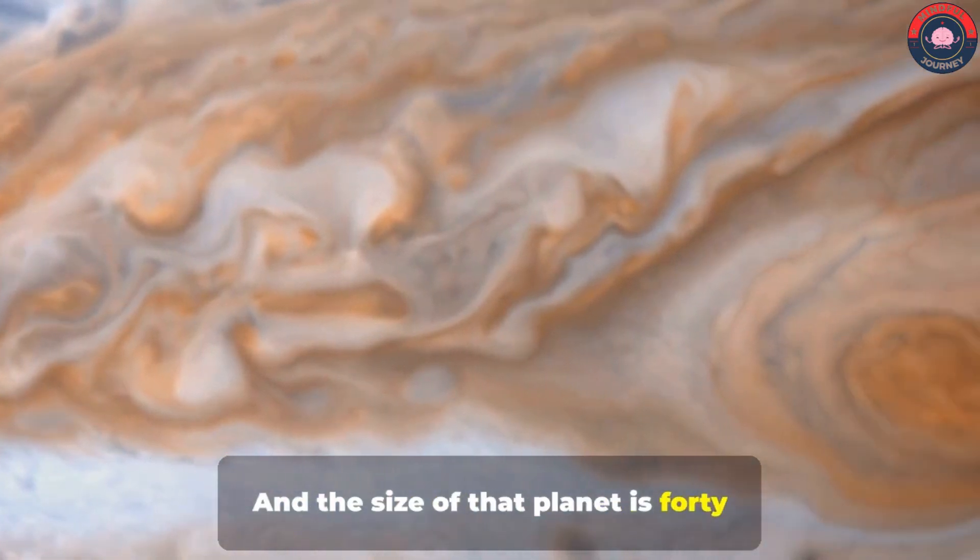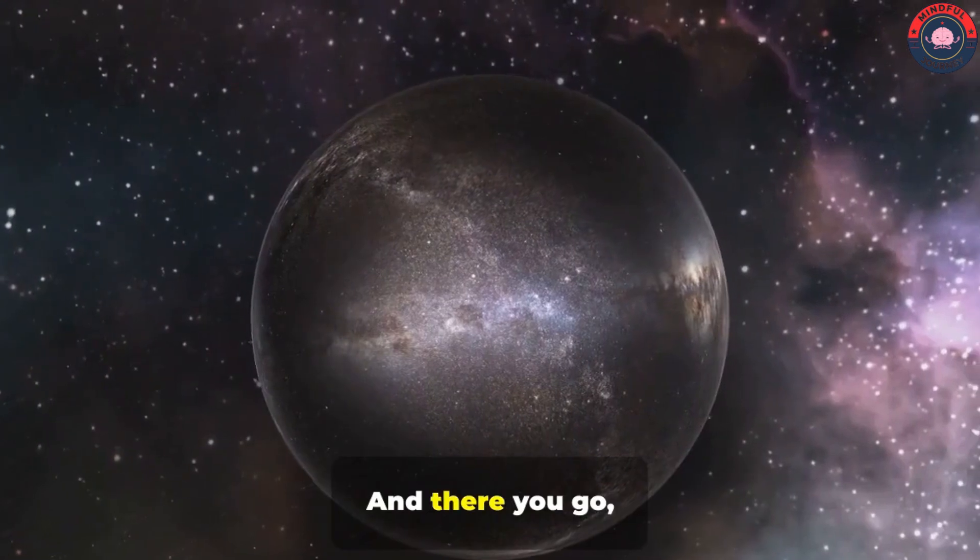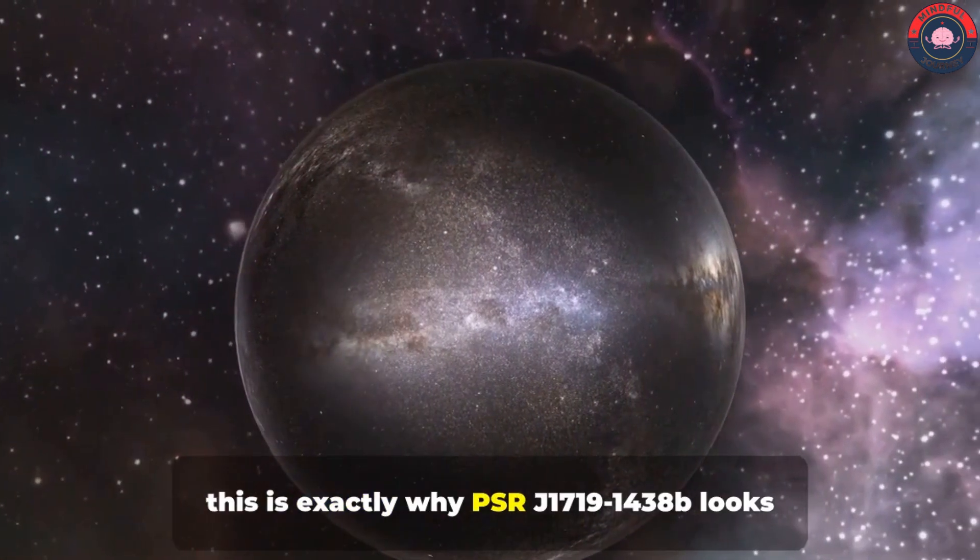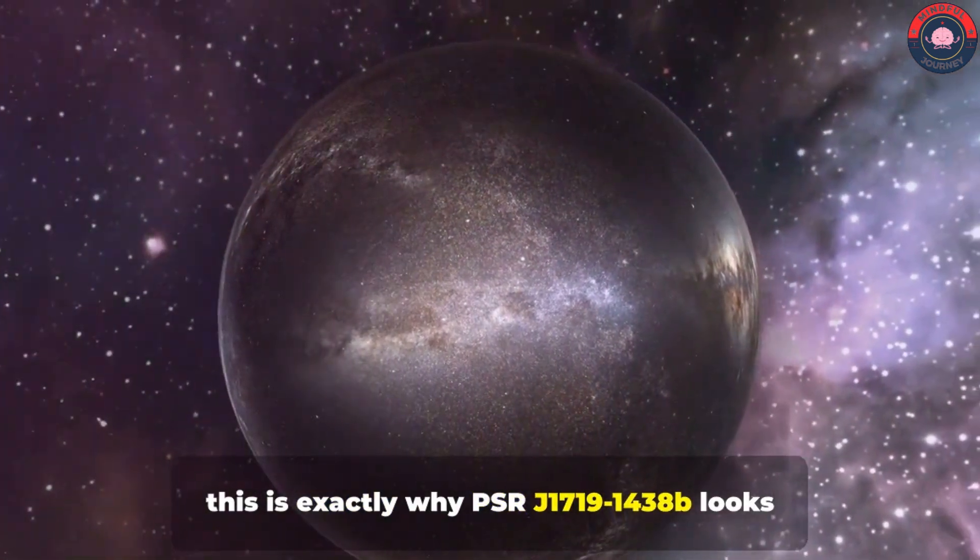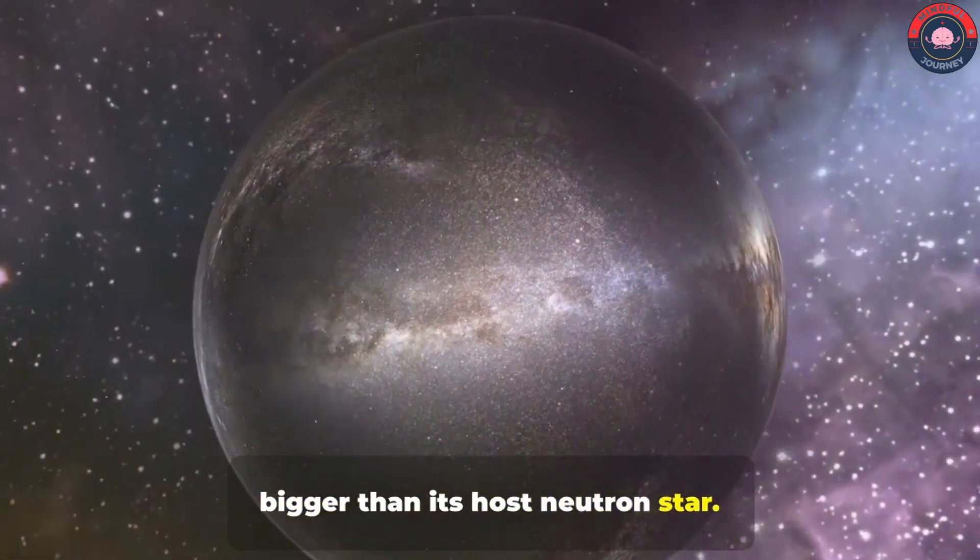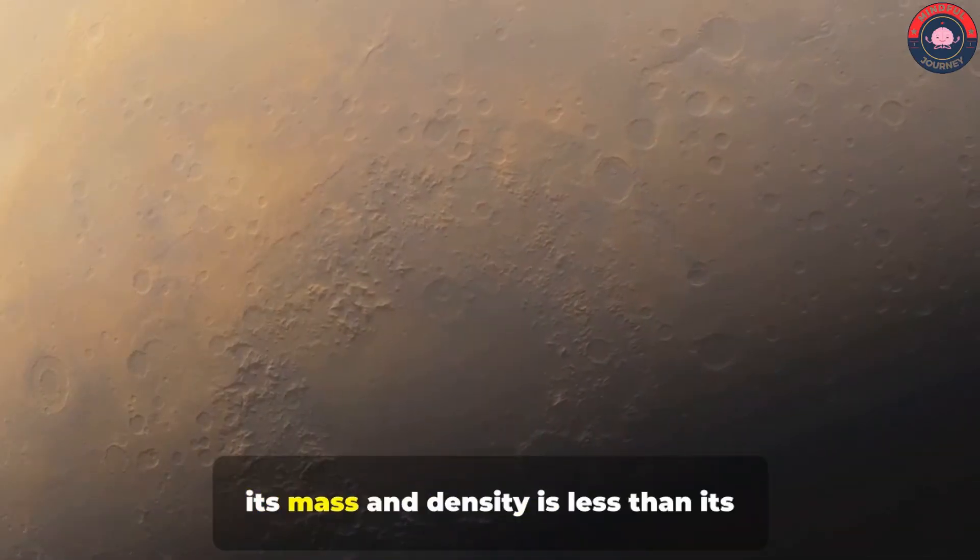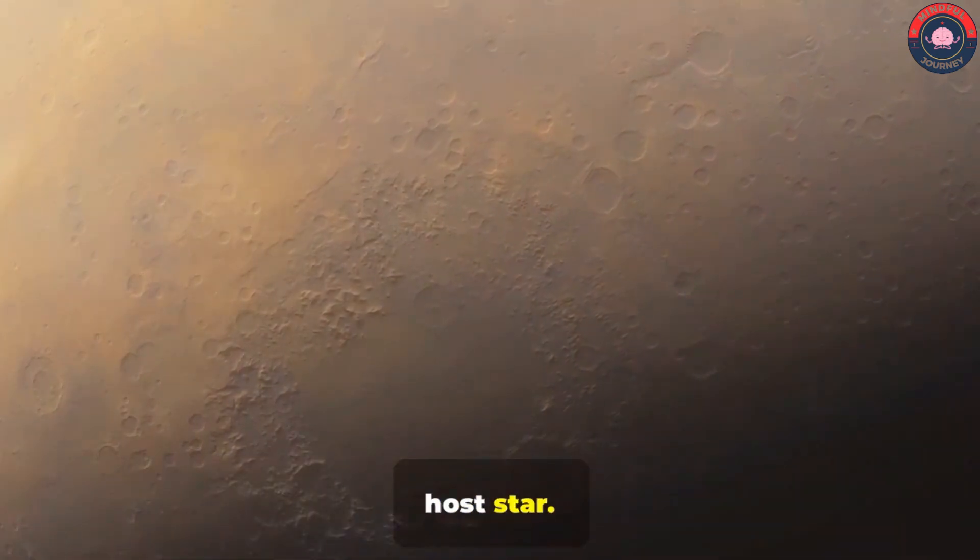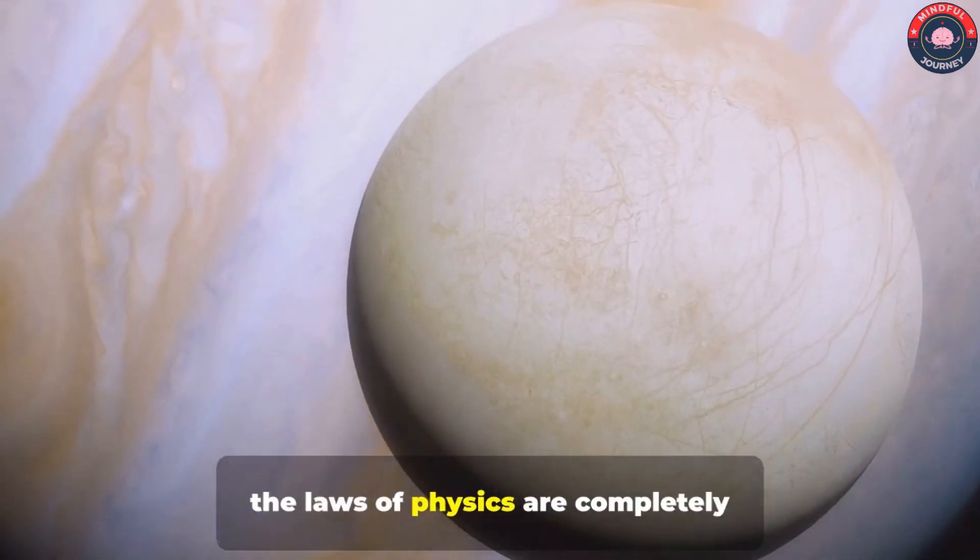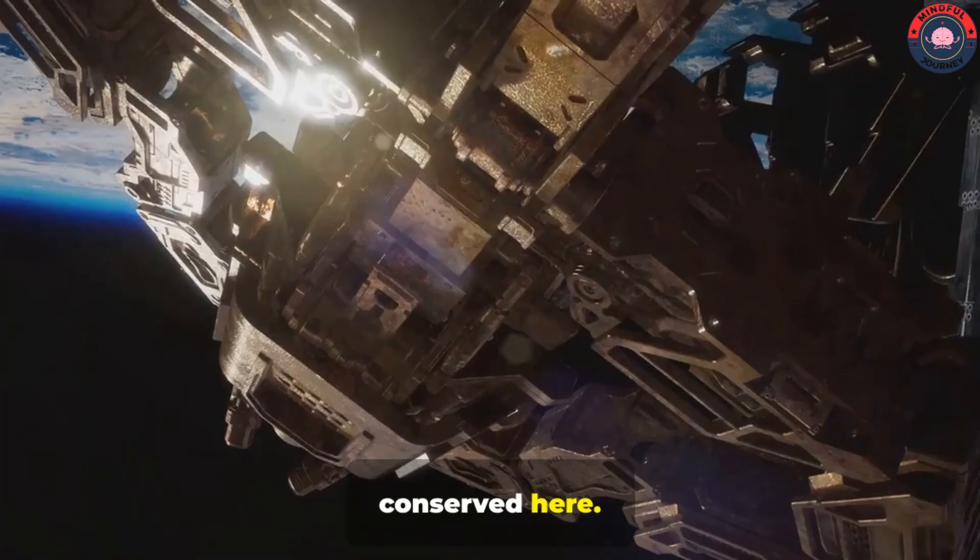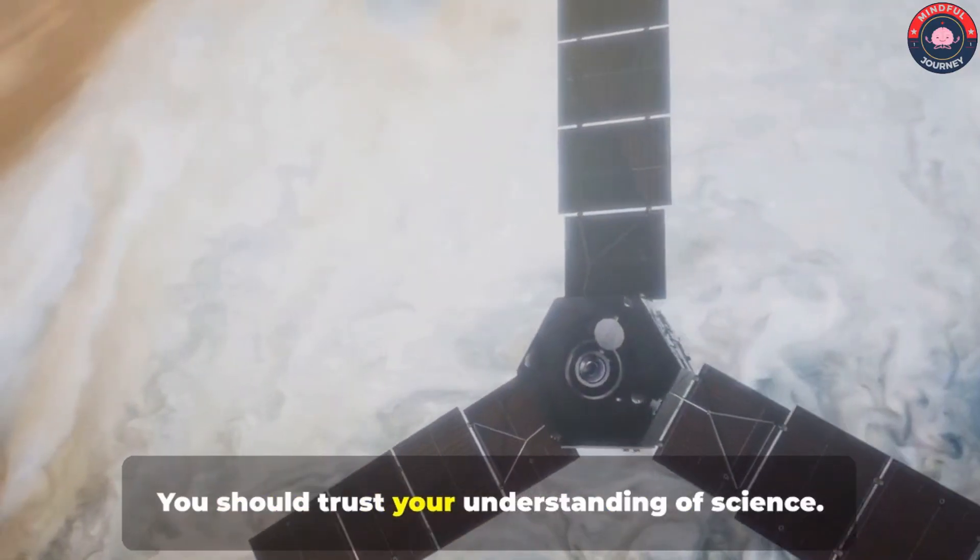And the size of that planet is 40% bigger than Jupiter. And there you go, this is exactly why PSR J1719-1438b looks bigger than its host neutron star. Actually, its mass and density is less than its host star. So, the laws of physics are completely conserved here. You don't need to worry, you should trust your understanding of science.